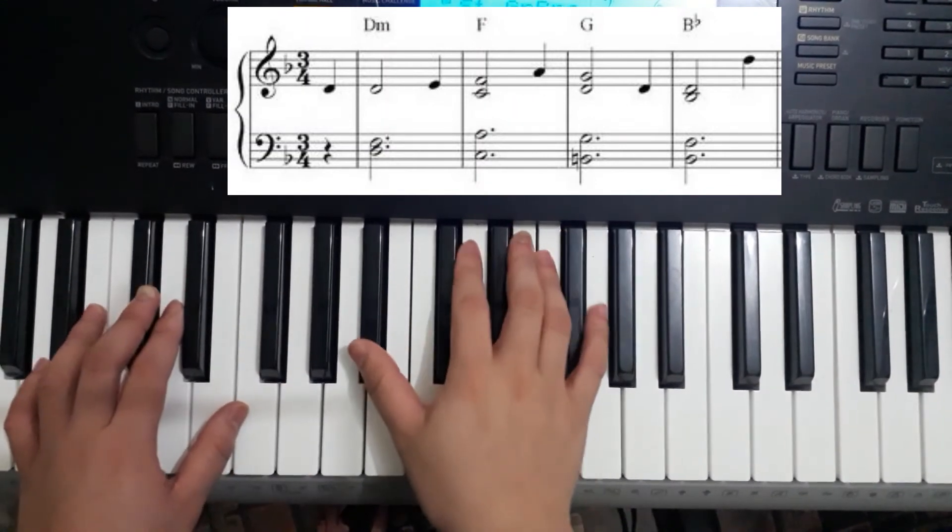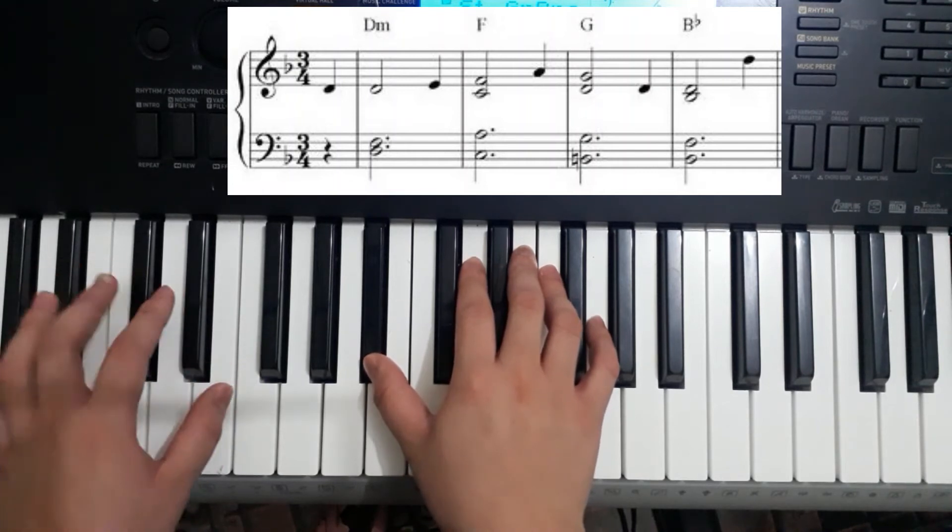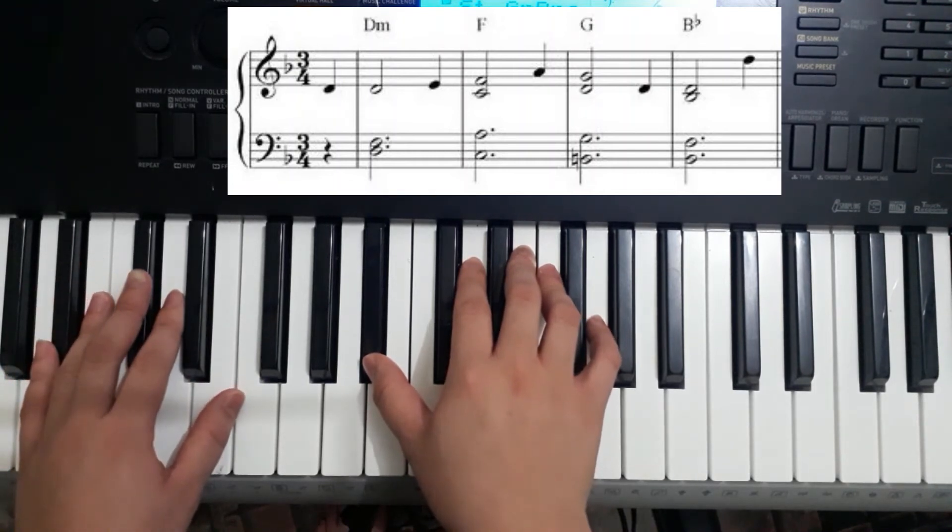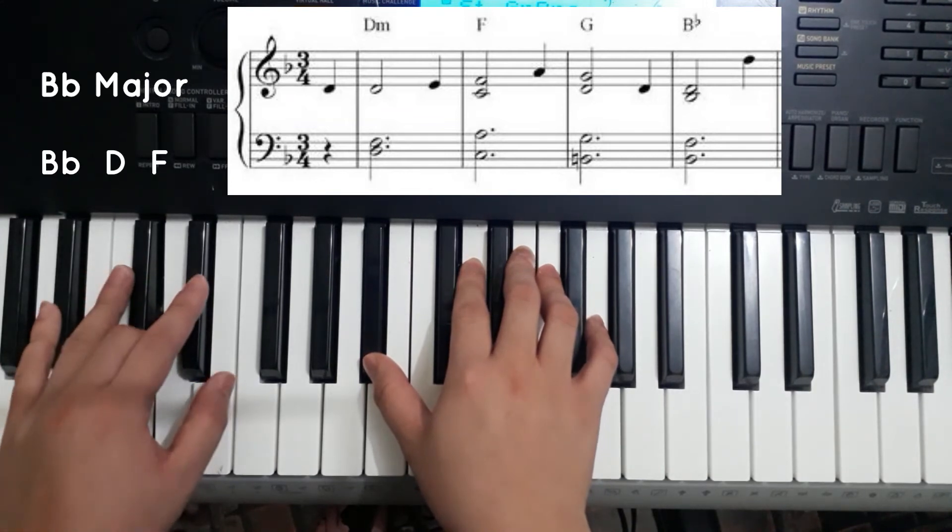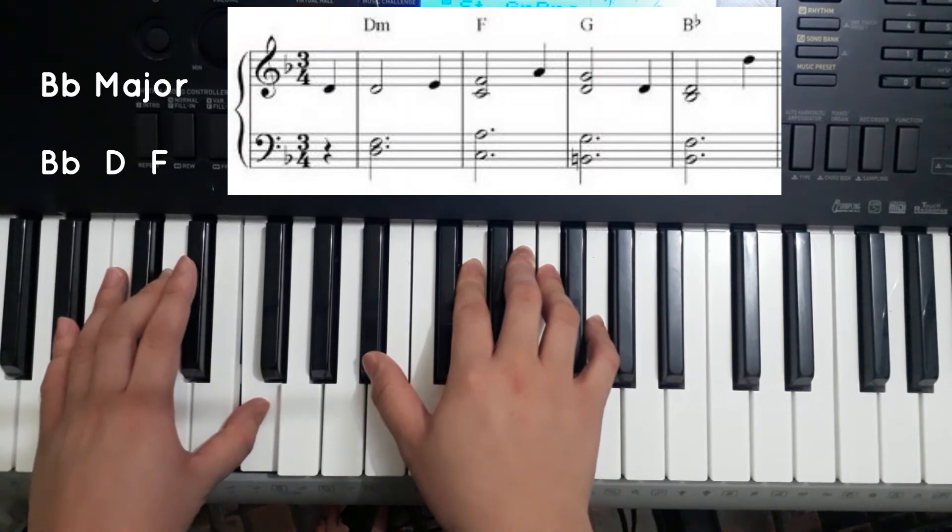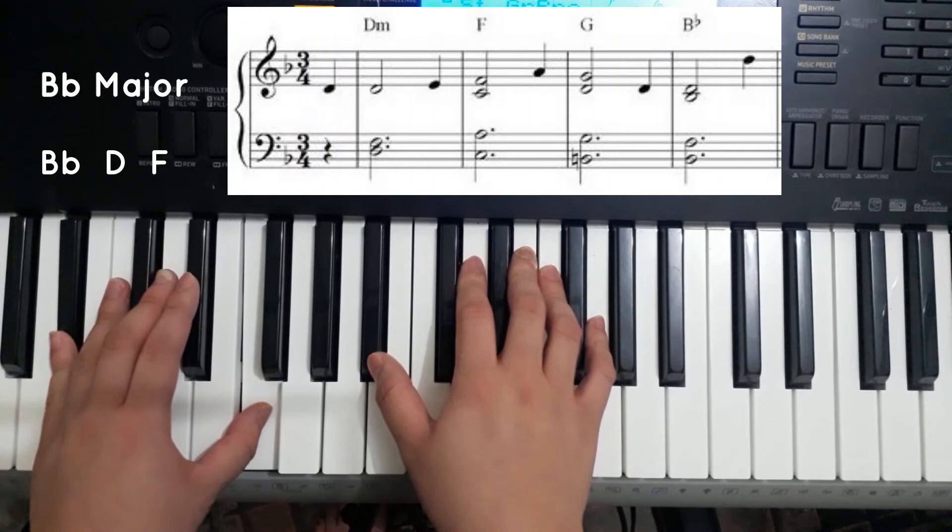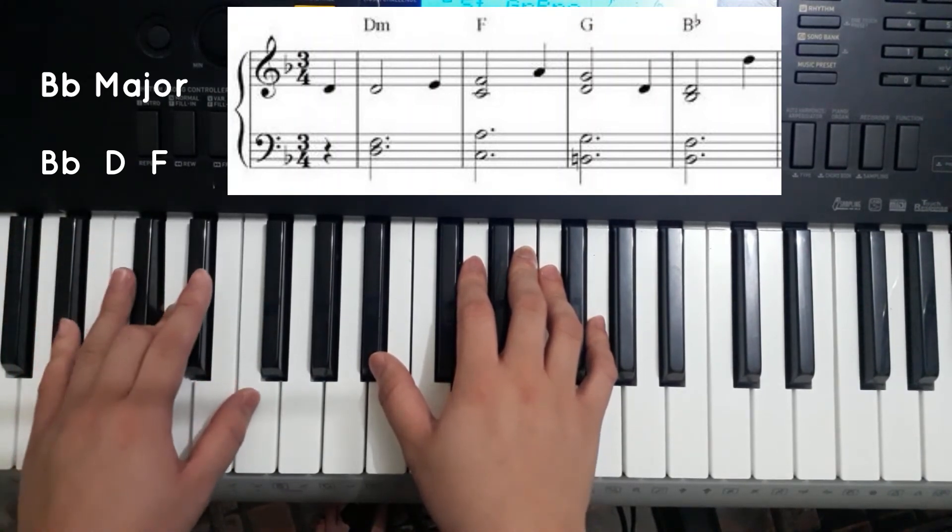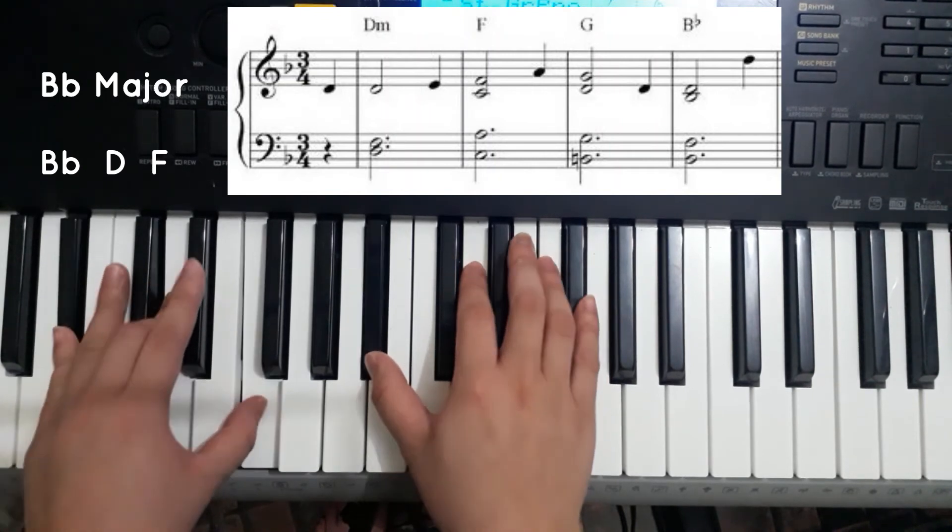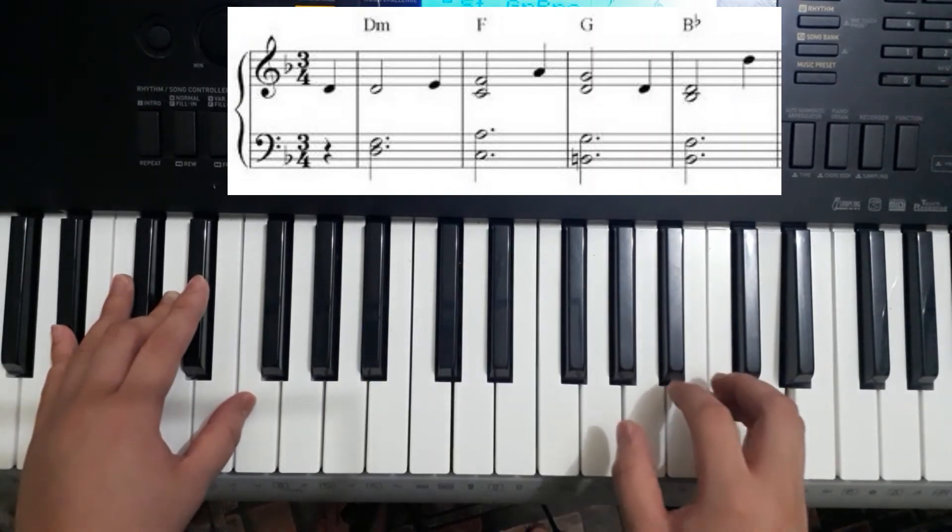On bar 5, on the right hand, we're going to play the Bb and the D. On the left hand, we're going to harmonize it with the Bb chord progression, Bb, D, and F. Even though it says we're only going to play the Bb and F, we're going to make it fuller sound. So we're going to play with the Bb, D, and F. Going to the next note is the D.